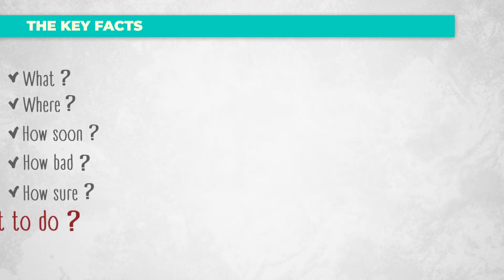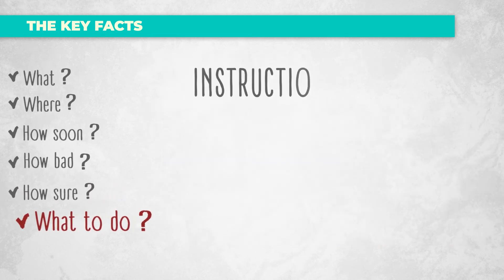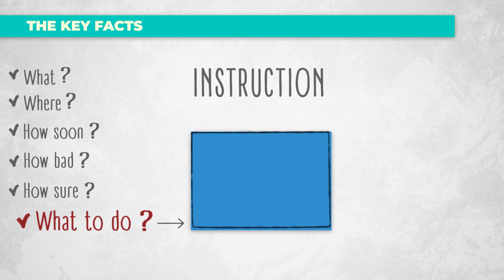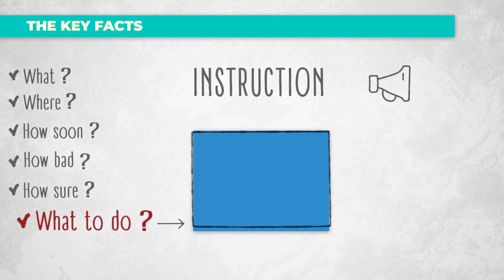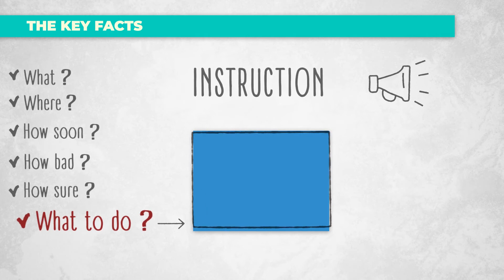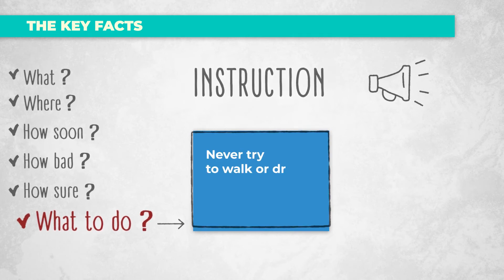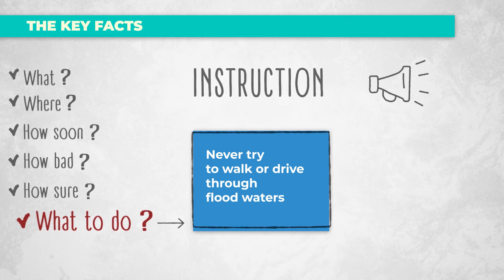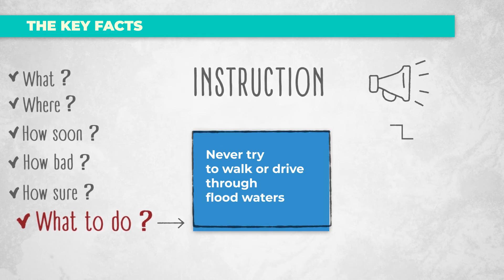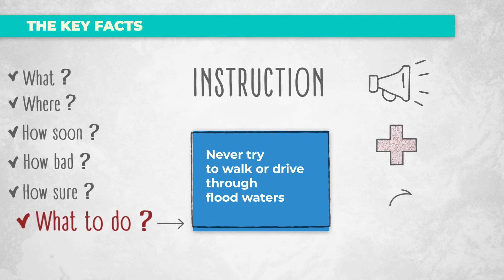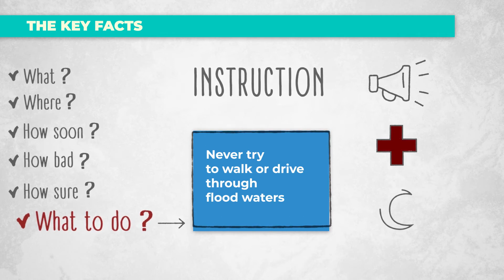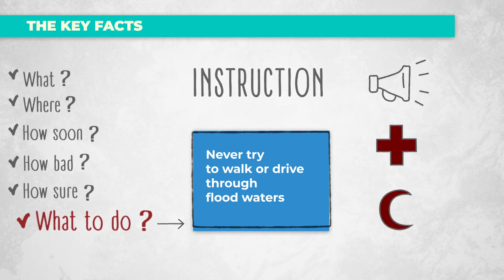When sending an alert, it is very important to include actionable guidance so that people know what to do when they receive the message. This is the instructions element of the CAP message — for example: never try to walk or drive through flood waters. Red Cross and Red Crescent key safety messages are available to be included as instructions from a trusted source.